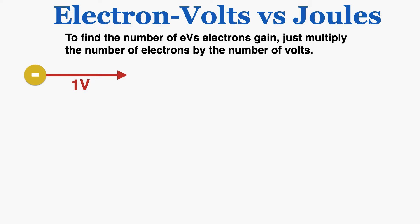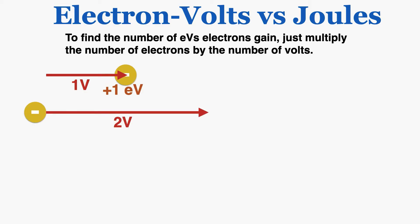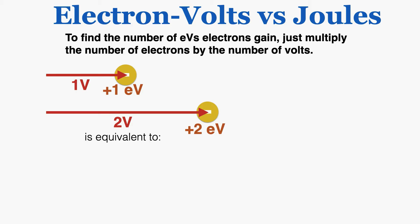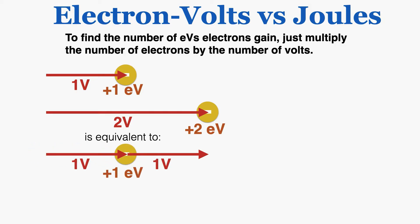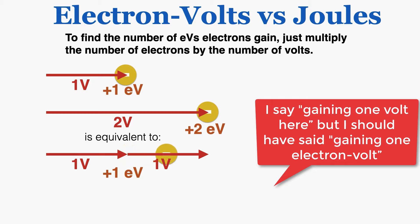As an example, if one electron passed through a region of one volt, it would gain one electron volt of energy. If an electron passed through a region of two volts, you just multiply the number of electrons by the number of volts — one electron times two volts — so that results in two electron volts of energy gained. That happens because passing through a two-volt space is equivalent to passing through one volt and gaining one electron volt, then passing through another one-volt region and gaining one more.